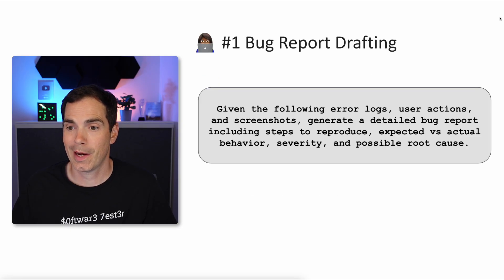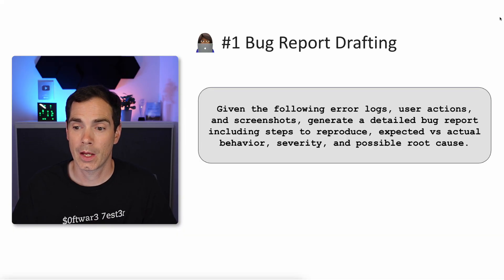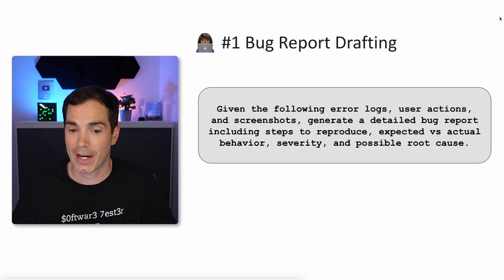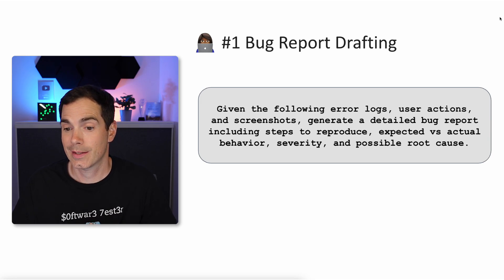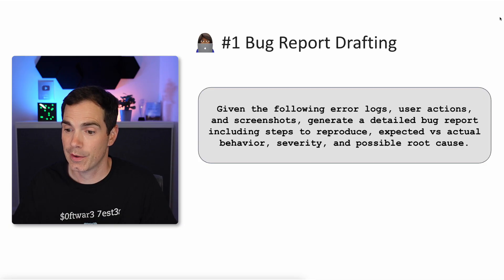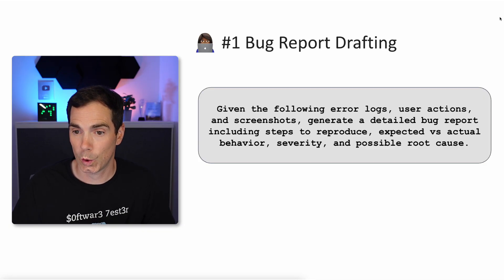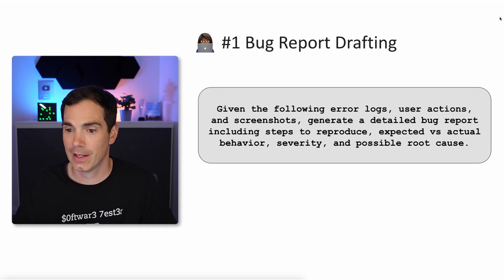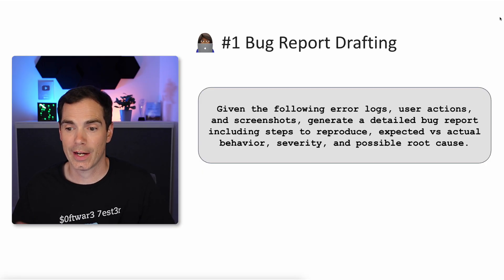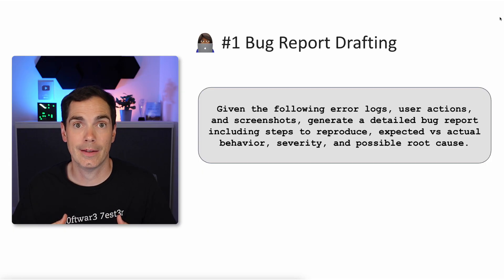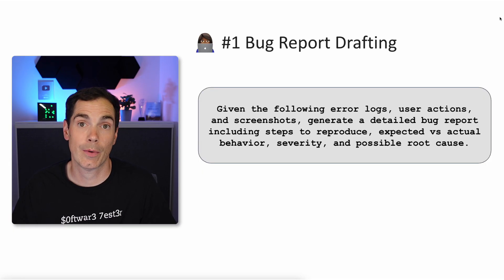Prompt one: bug report drafting. Given the following error logs, user actions, and screenshots, generate a detailed bug report including steps to reproduce, expected versus actual behavior, severity, and possible root cause. You give the LLM the error logs, user actions, screenshots, and the steps needed to reproduce the bug, and then it can generate the bug report for you.